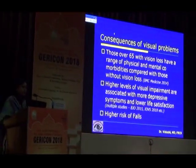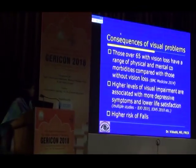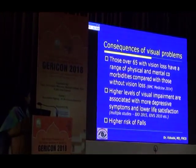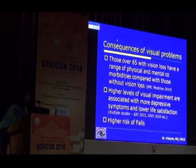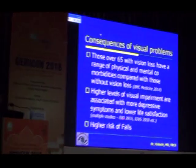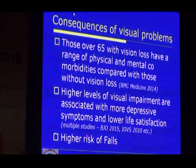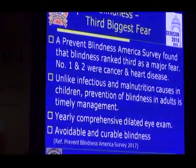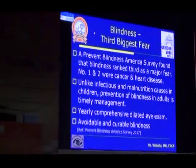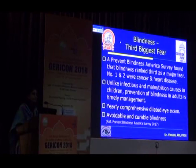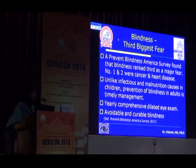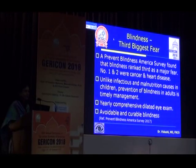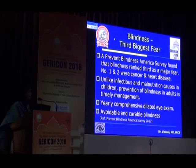What are the consequences of visual problems in the elderly? It has been proven in multiple studies that if you have visual loss in an elderly person, you have many more physical and mental comorbidities. It is associated with depressive symptoms and lower life satisfaction, and there is obviously a higher risk of falls. Blindness is the third biggest fear among the population — number one being cancer, number two being heart disease — and after that, people are very afraid of going blind in this age group.